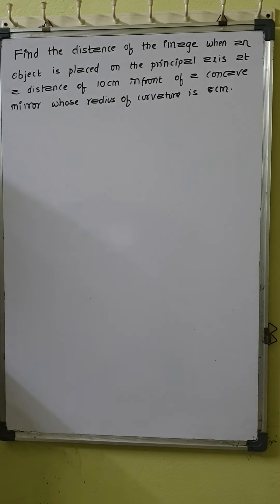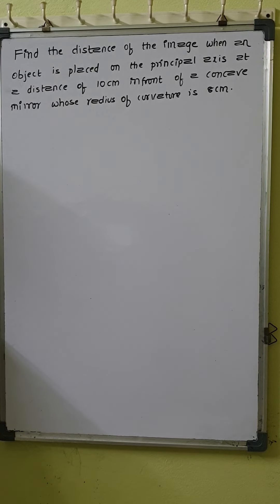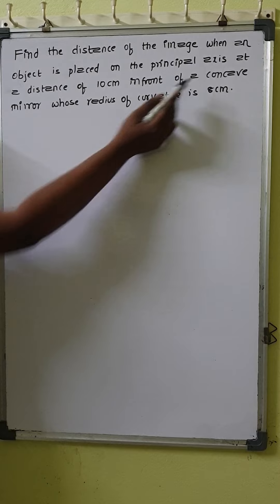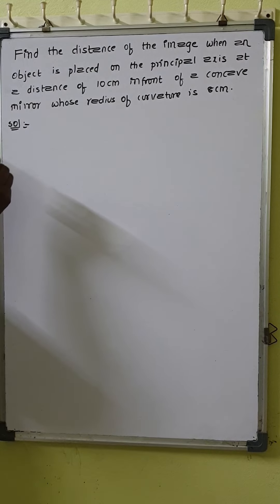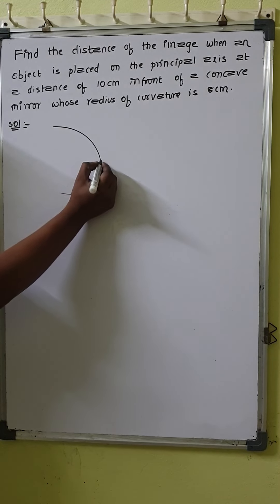Hello children. In my playlist of mirror formula problems, this is the third problem. Let us go through the question: find the distance of the image when an object is placed on the principal axis at a distance of 10 centimeters in front of a concave mirror whose radius of curvature is 8 centimeters.